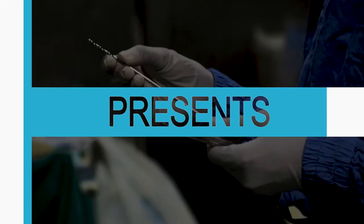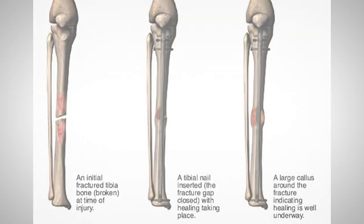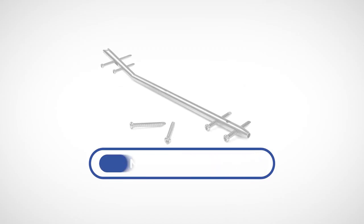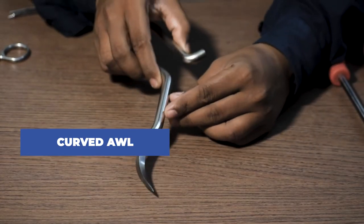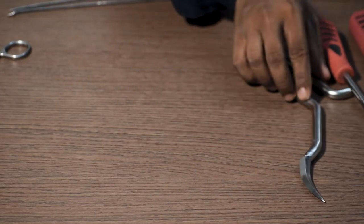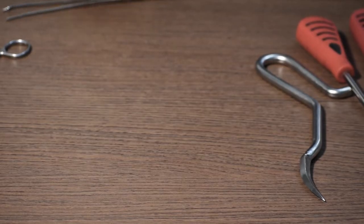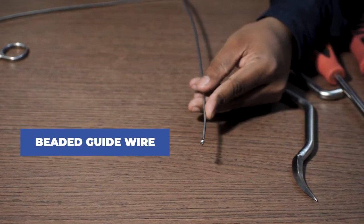Tibia nailing is used to fix shaft fracture of tibia as shown in the diagram. This device is called a curved awl. This is used to make the entry point for the tibia nail. This is a beaded guide wire.